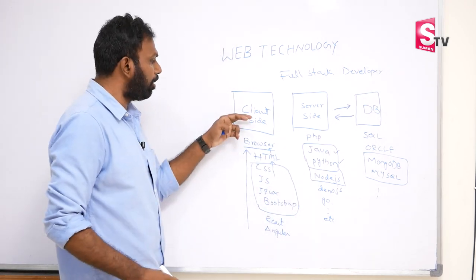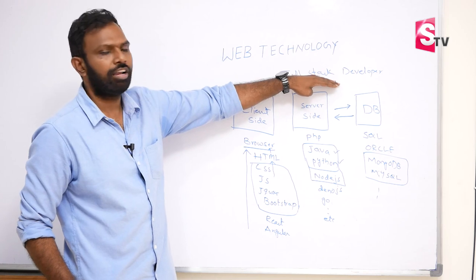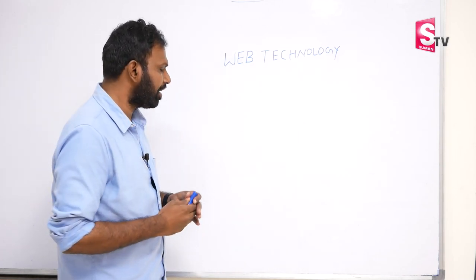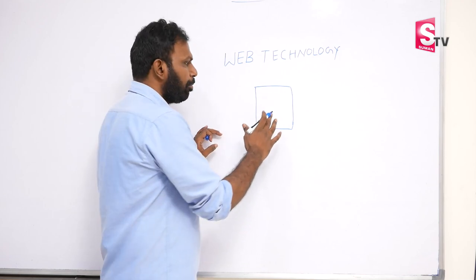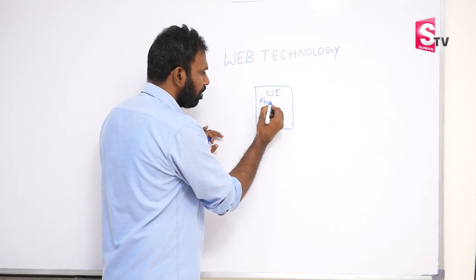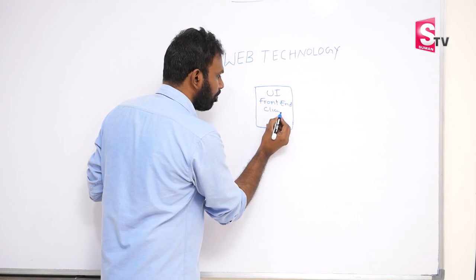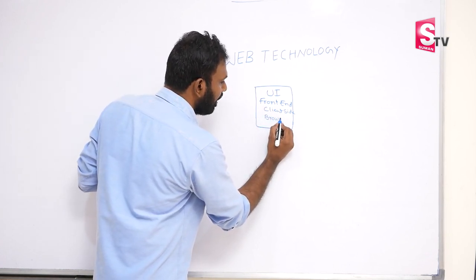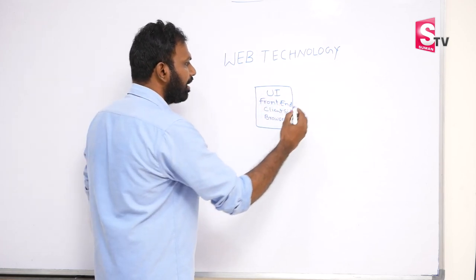The names for client-side include UI (User Interface), front-end, browser-side. These all refer to the same thing. UI means user interface - simple web pages that users interact with.